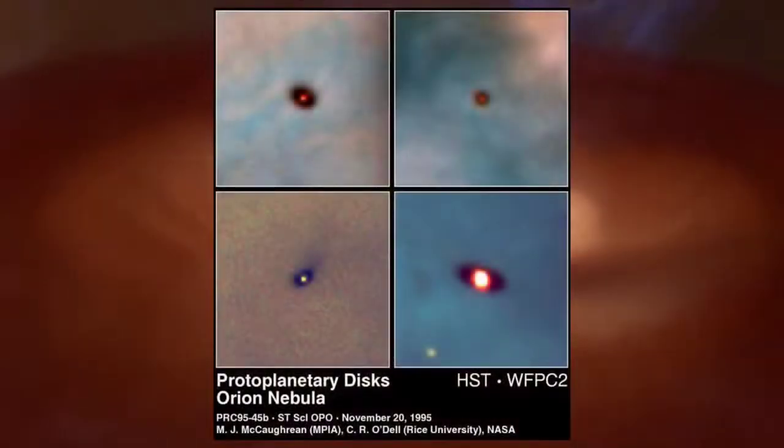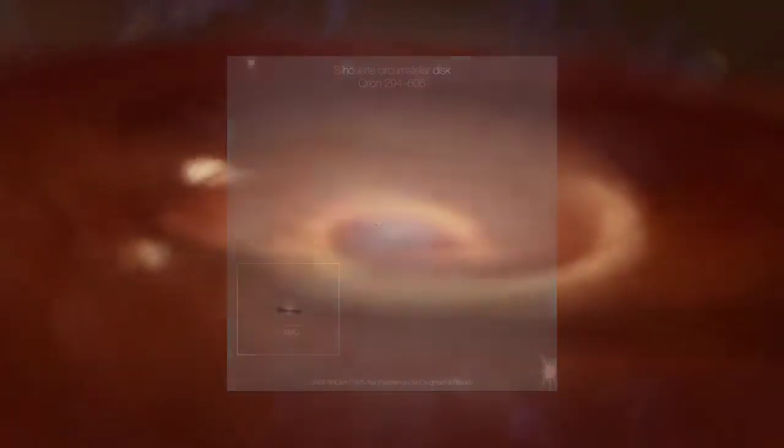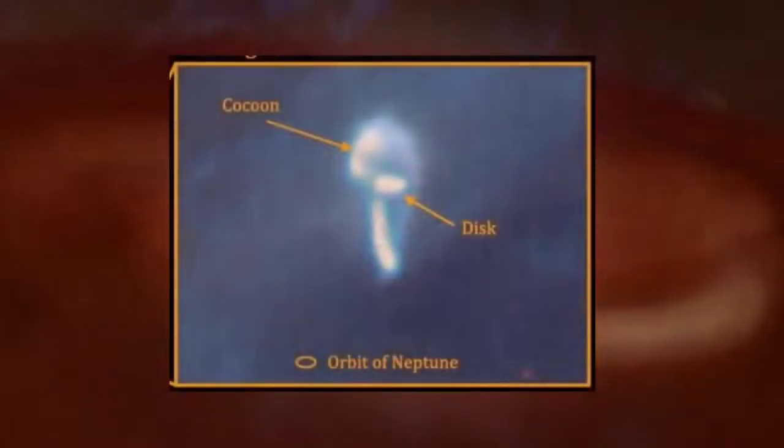However, this is not a new discovery. Earlier, the Hubble Telescope has discovered a lot of planetary disks in the Orion Nebula. But the infrared vision of the Webb Telescope is giving us more information about these objects.